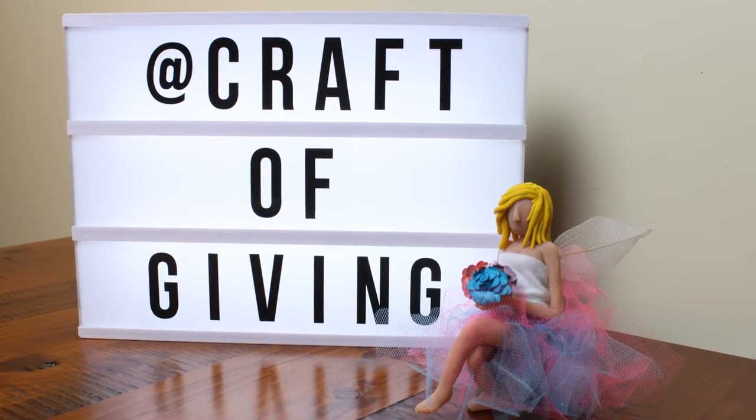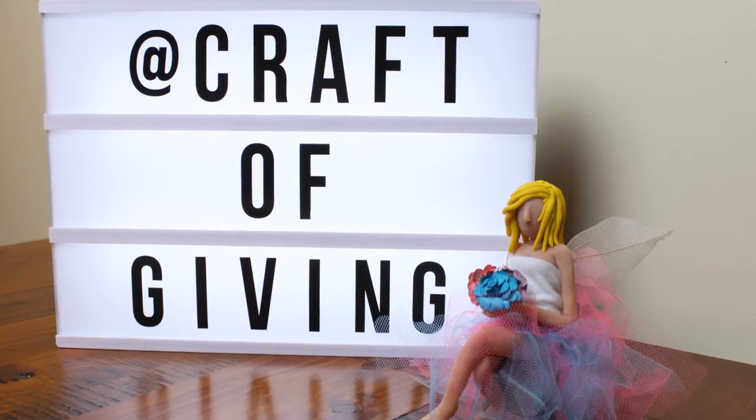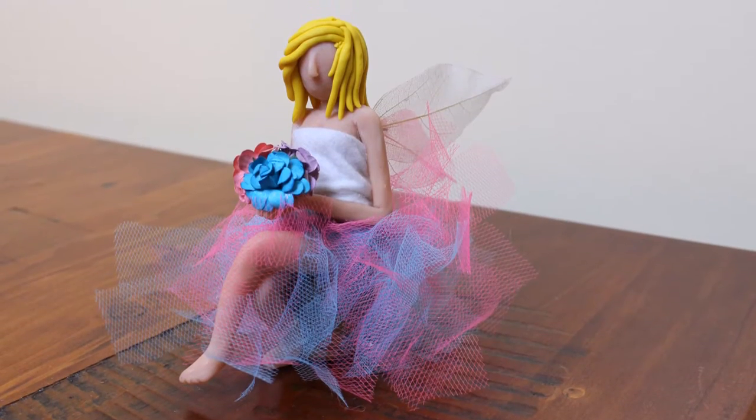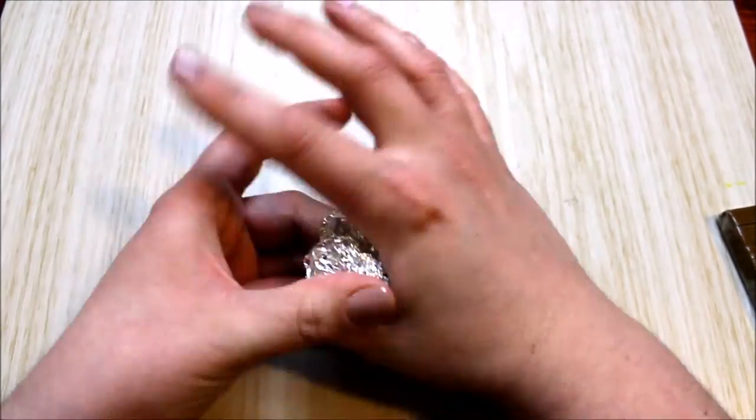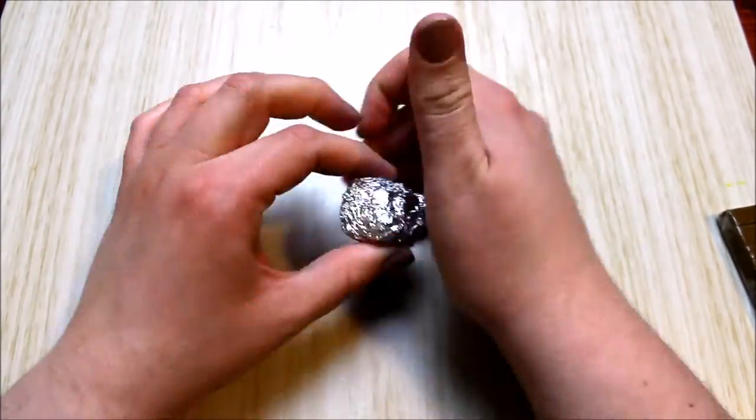Hello everyone, it's Jenru from Craft of Giving. In today's video I would love to share how to make this super cute little polymer clay fairy. I started to create the fairy by creating the tree stump she's sitting on, first by using a sheet of aluminum foil that I scrunched up really tight into a little stump shape.